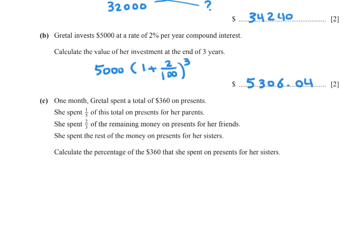Part (c): One month Grittle spent a total of $360 on presents. She spent 1/5 of this total on presents for her parents, and 2/3 of the remaining money on presents for her friends. She spent the rest on presents for her sisters. First, 1/5 times 360 equals $72. The remaining amount is 360 minus 72 equals $288.